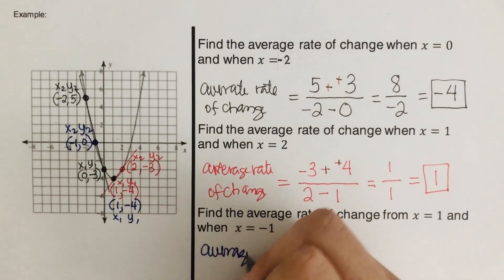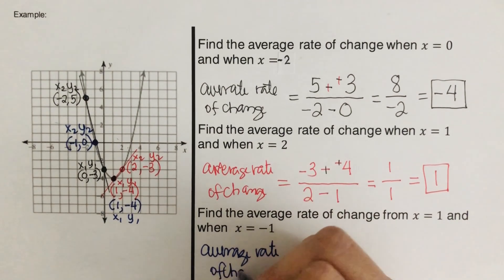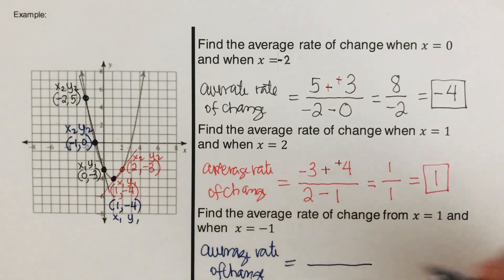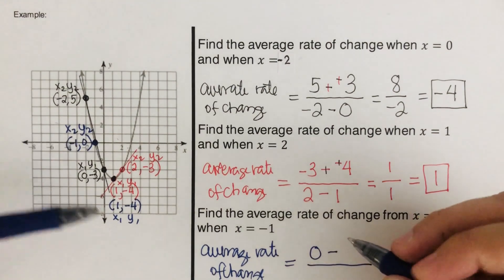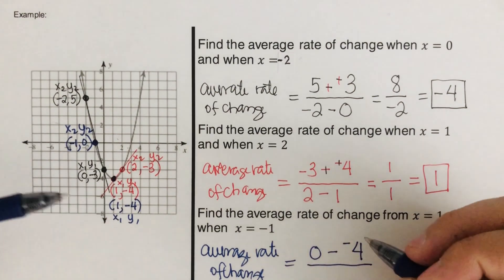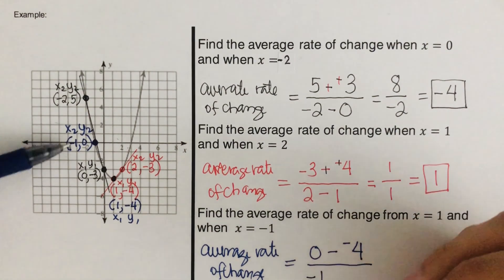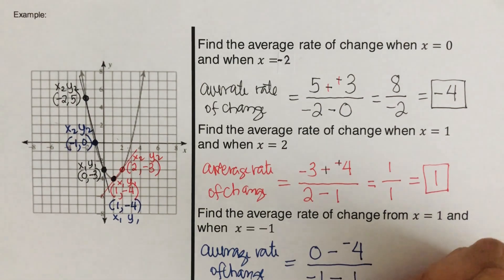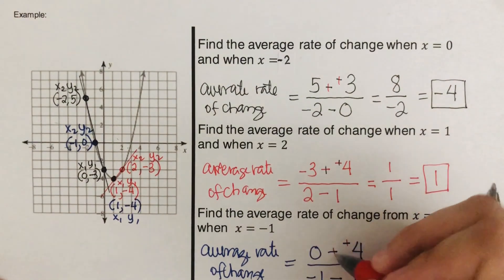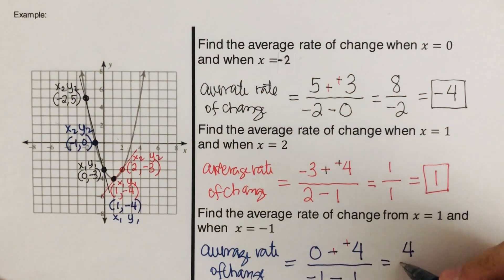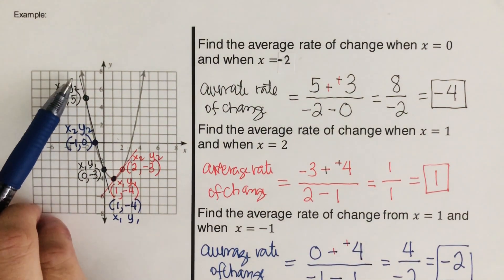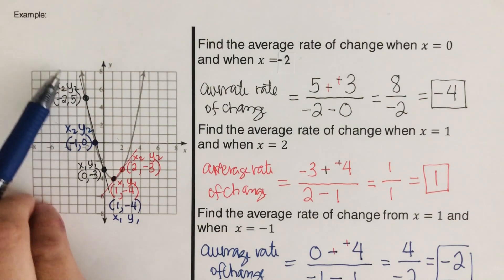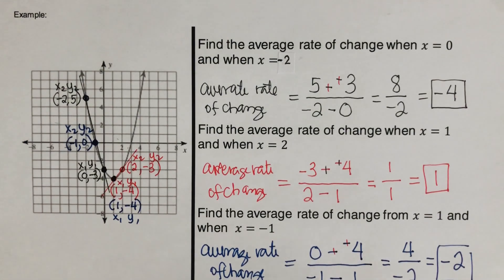The average rate of change uses the same formula. Y sub 2 is 0, minus y sub 1 which is negative 4, over x sub 2 which is negative 1, minus x sub 1 which is 1. Changing the double negative to plus, that comes out to 4 over negative 2, which is negative 2. This makes sense because the slope for a line that is going down from left to right is a negative value.